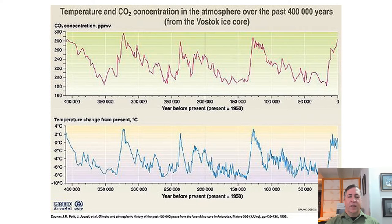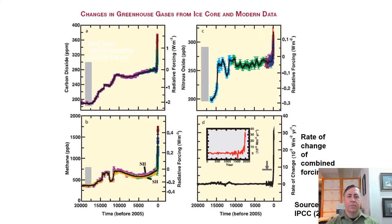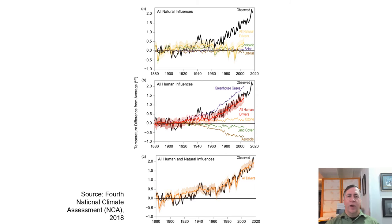Using ice cores, scientists have been able to track CO2 concentrations over the past 400,000 years. Temperatures follow CO2 concentrations almost exactly and caused changes big enough to start and end ice ages. As you can see here, carbon dioxide, nitrous oxide, methane, and sulfur dioxide concentrations have all been increasing dramatically in the past 100 years. This shows the past 20,000 years — there is a massive uptick of greenhouse gases far above natural levels. The data show a very high correlation between surface temperatures and greenhouse gas concentrations.